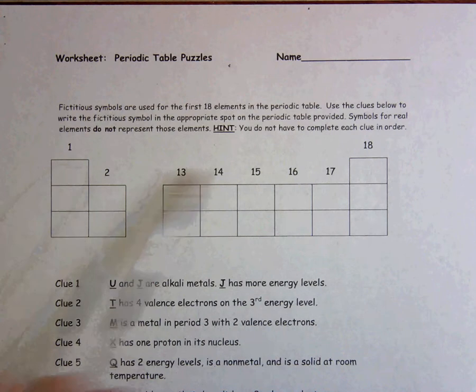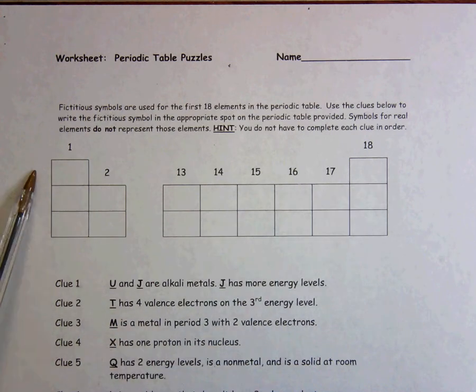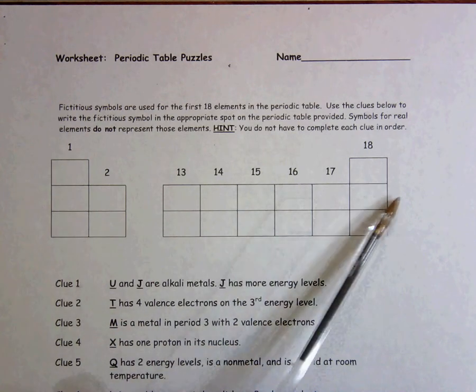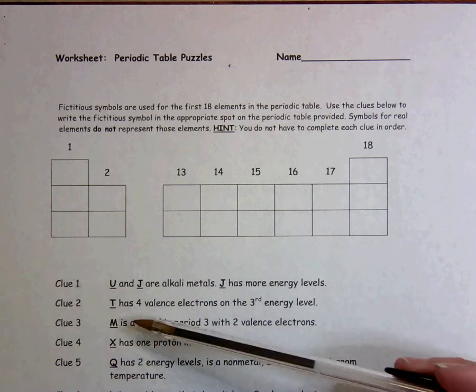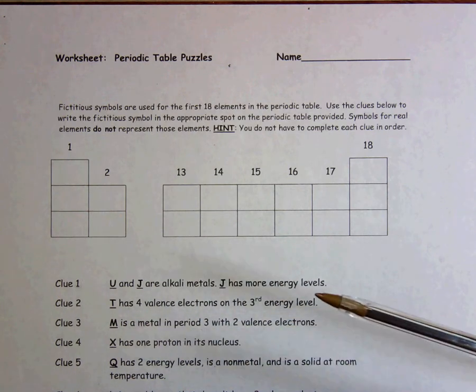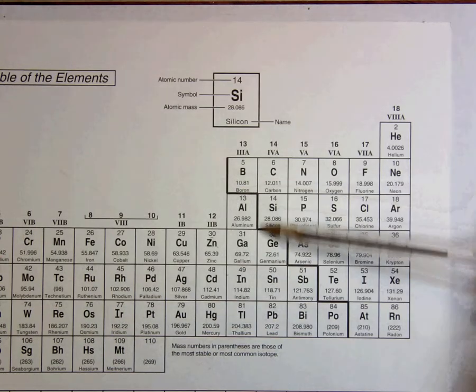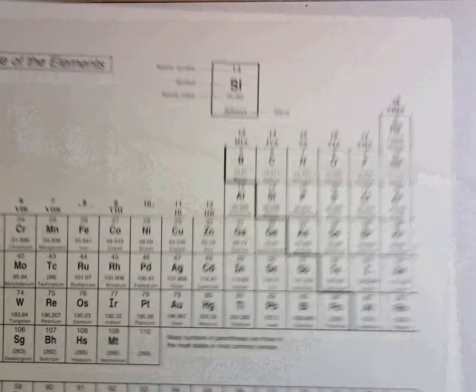The first period has one energy level, the second period has two energy levels, and so on. You can tell metals from non-metals by looking at where the zigzag line is on your periodic table.